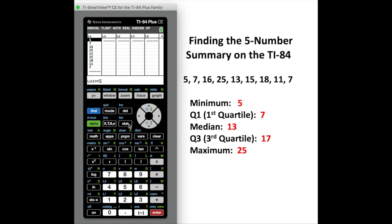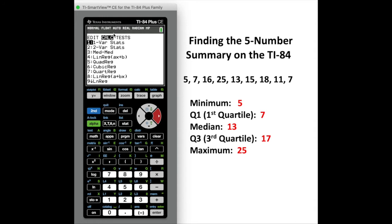Now I'm going to go back to STAT and I'm going to arrow to the right under the CALC menu. The five number summary can be found under the one-variable stat, so you're either going to hit 1 or arrow down and hit enter.